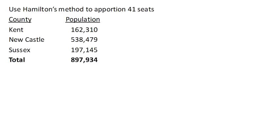The state of Delaware has three counties: Kent, Newcastle, and Sussex. The state House of Representatives has 41 members, and we want to divide these representatives among these counties. They're not required to do this, but let's pretend — we'll use Hamilton's method to apportion those 41 seats.